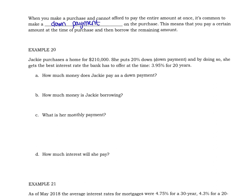Let's take a look at this example. Jackie is going to purchase a home for $210,000. She's going to put 20% down — that's the down payment — and then she gets the best interest rate the bank has to offer at the time, 3.95 percent, for 20 years. So how much does she pay as a down payment?